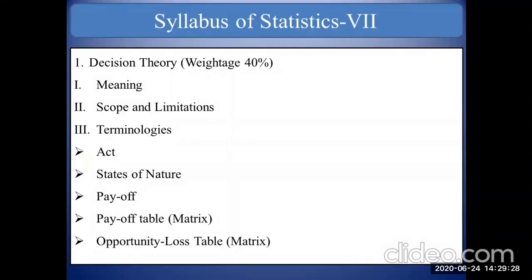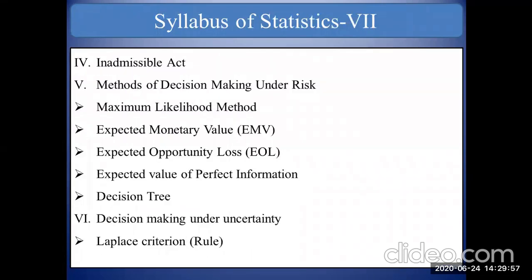There are two units in our syllabus. Unit one is Decision Theory, which has a weightage of 40 percent. Unit two is Small Sample Test, with a weightage of 60 percent. Now let us see what topics and points we will cover in the Decision Theory chapter.